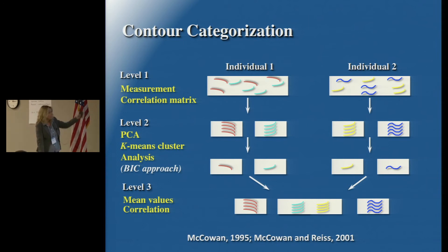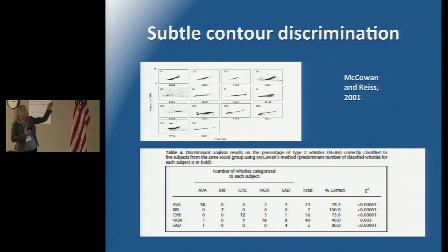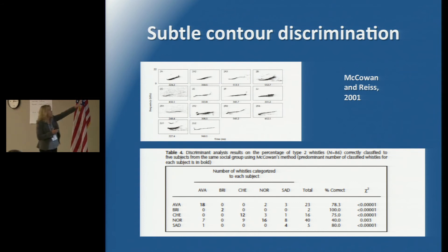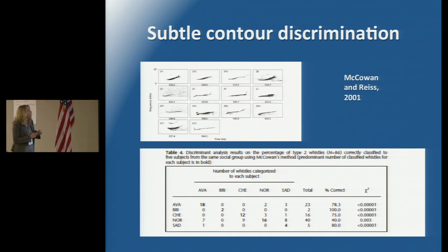It was relatively easy to categorize very distinctive contours from each other. We subsequently applied this to more subtle kinds of changes in what we call rise whistles — similar to some of what Layla was showing us earlier — and found that we could discriminate subtle contours based upon individual identity as well. So we can definitely get subtle information with this kind of approach.